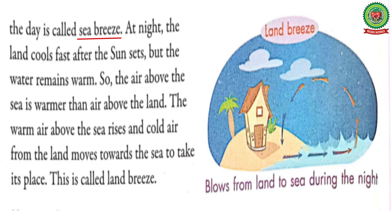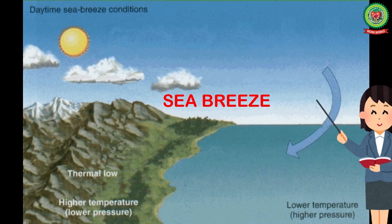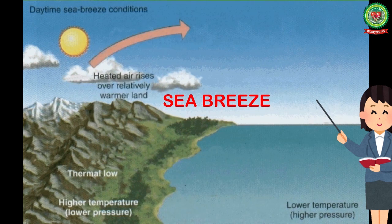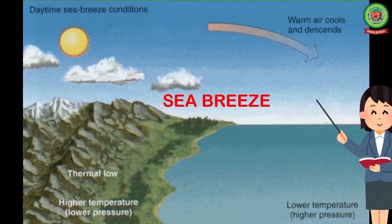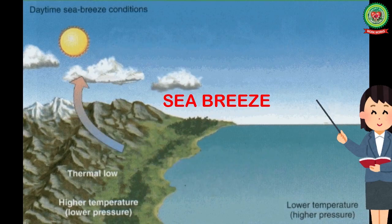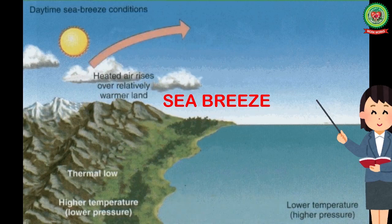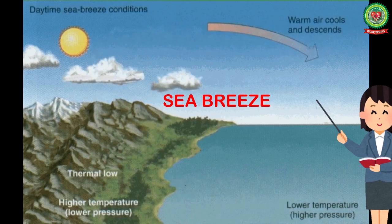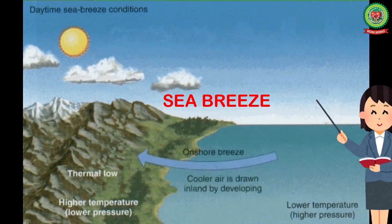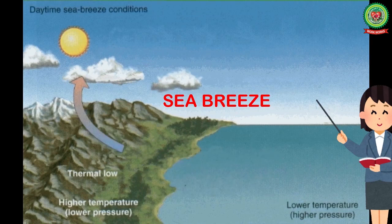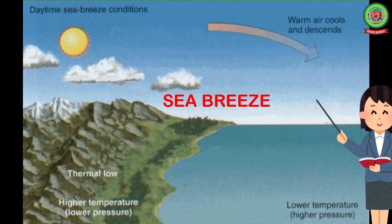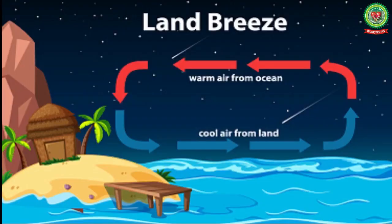This movement of air or breeze from the sea towards the land during the daytime is called sea breeze. The direction of arrows shows how the hot air from the land rises up and cool air from the sea takes its place. Sea breeze blows from sea to land during the day.